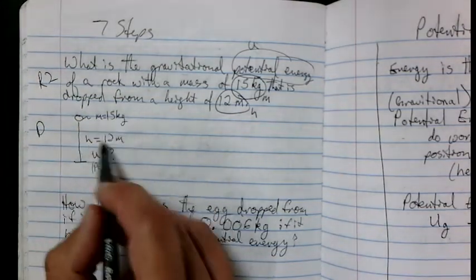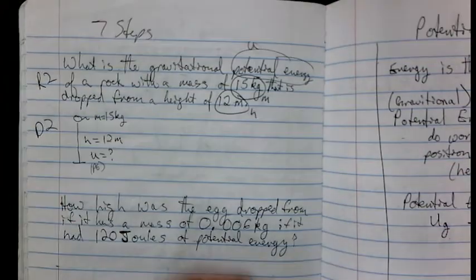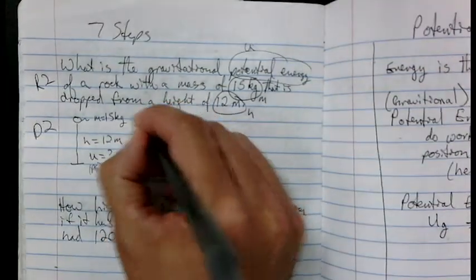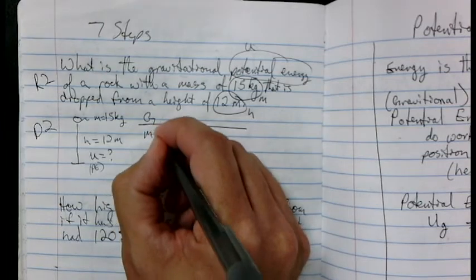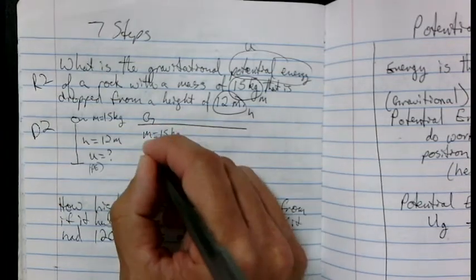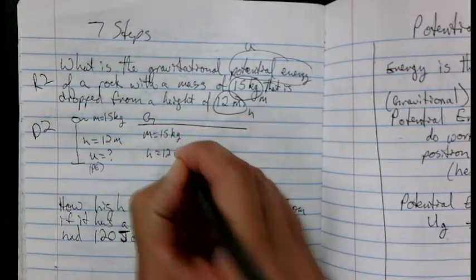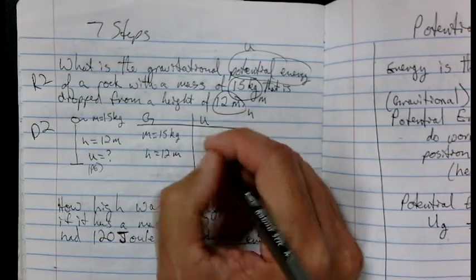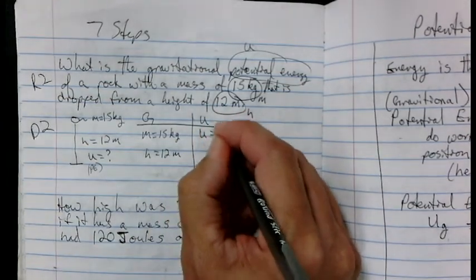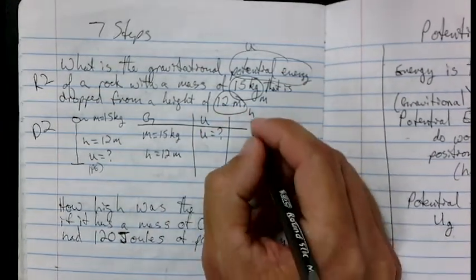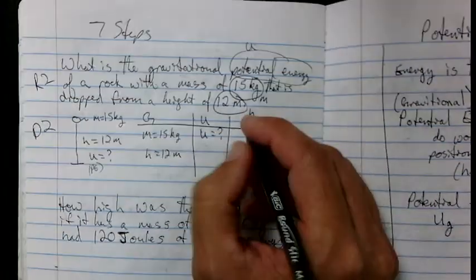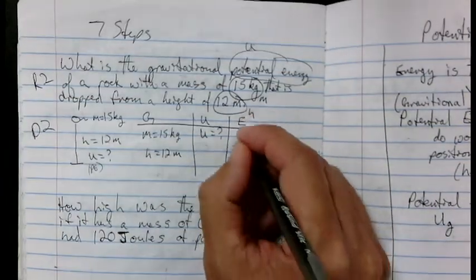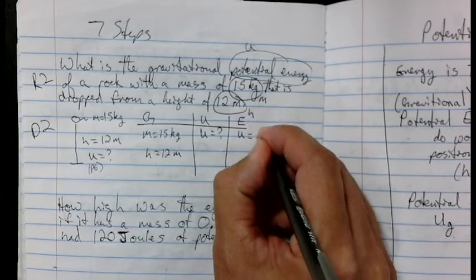Now I'm going to list my givens. Mass equals 15 kilograms. Height equals 12 meters. The unknown is my potential energy. Now I can look at my yellow sheet or look for an equation. We only have one at the moment. U equals MGH.